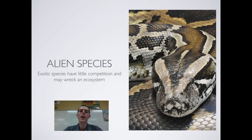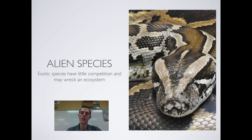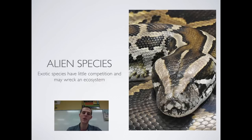The next major cause of biodiversity decline is alien species. An alien species is any species living in an area where it's not supposed to be. Alien species and exotic species are interchangeable words — I'm talking about an animal living outside of its home range. Every animal has an area where it evolved and is native to; if that animal gets moved somewhere else, it has become an alien or exotic species.